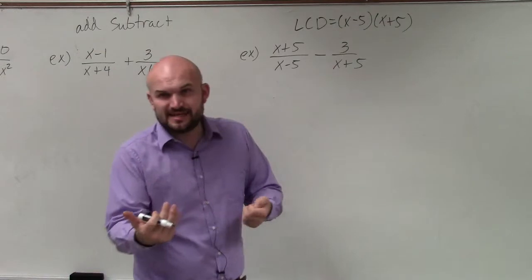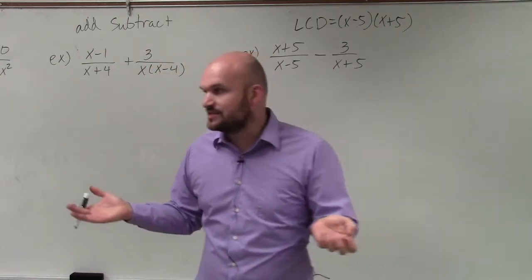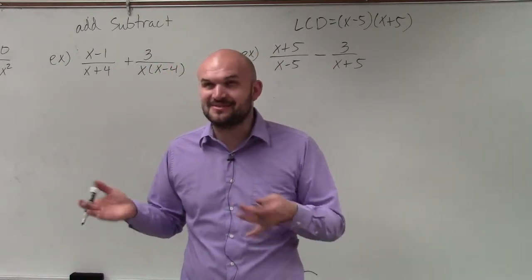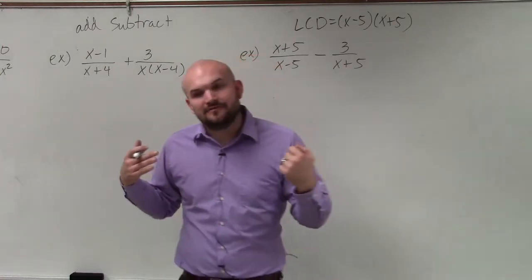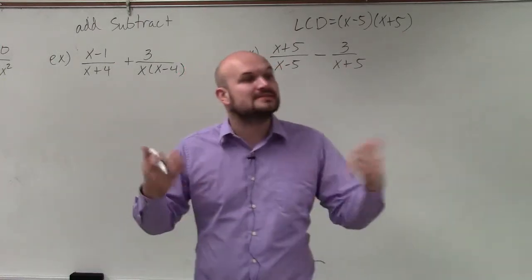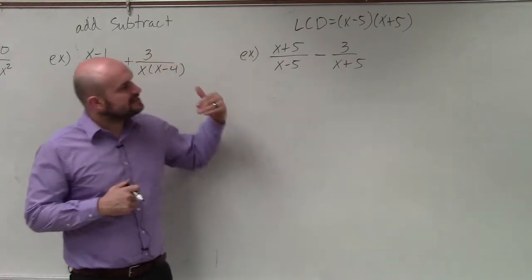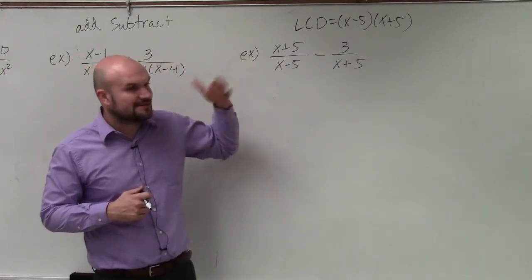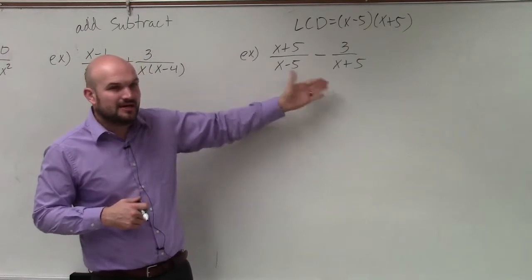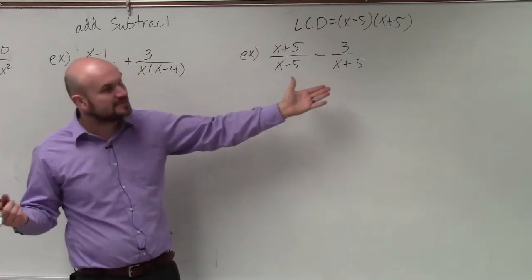With numbers, it's easy. The common denominator of 6 and 3 is 6. Of 9 and 2, though, is 18. So with numbers, it sometimes becomes difficult. But with polynomials, you actually just find the product, and that's going to be a common denominator.